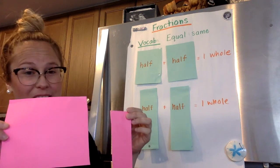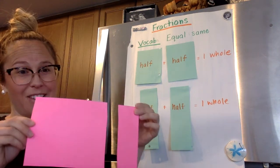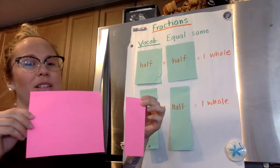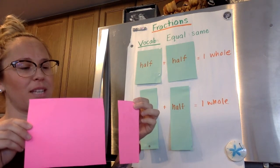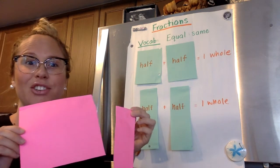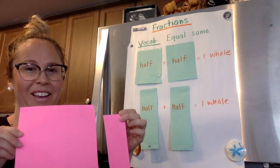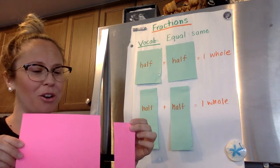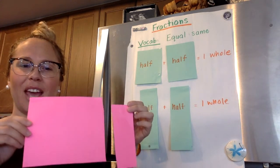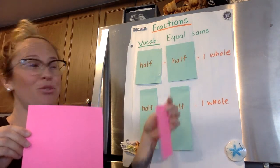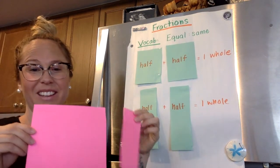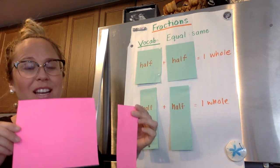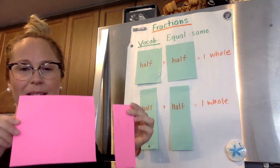Think of it like this: if you had a cake in the shape of a rectangle, and your brother said "let's share the cake — I get half, you get half," he's going to be cutting it into fractional parts. If he said "I've cut the cake, here's my half, here's your half" — did you get the same amount of cake? No. So when we measure fractional parts, the parts all have to be equal, the exact same size.